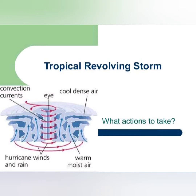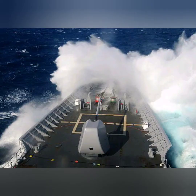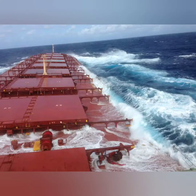Hello friends. In this video I'll be discussing the TRS, which stands for Tropical Revolving Storm. I'll be discussing the characteristics and more importantly how to detect and avoid it. As the name suggests it is dangerous for ships and navigation and thus it must be avoided at any cost.